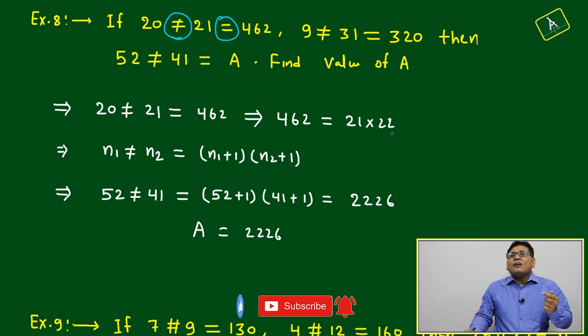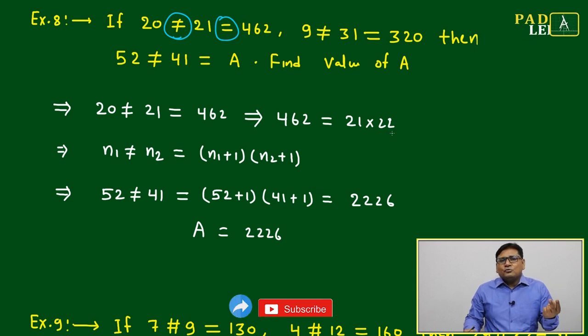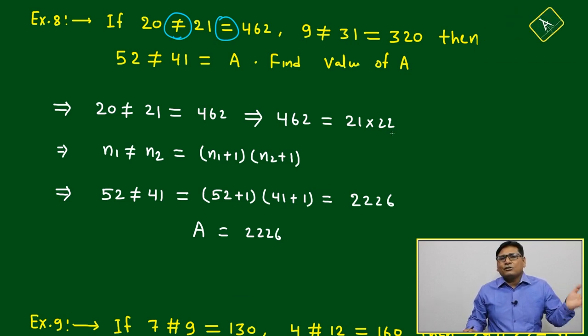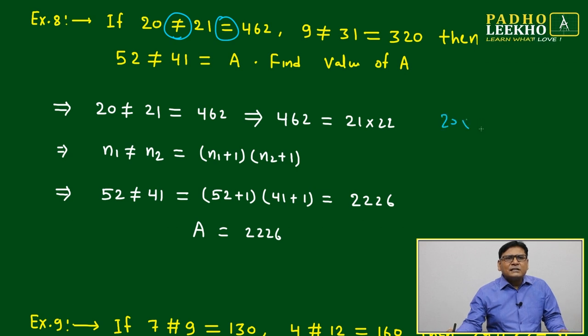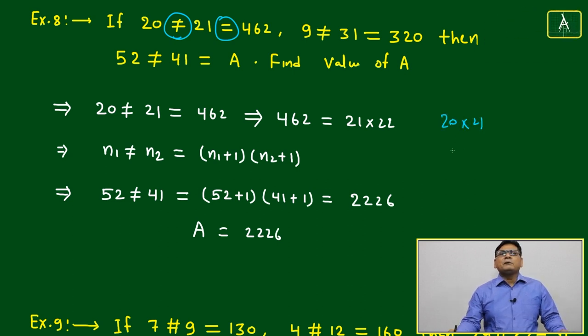Based on addition of two two-digit numbers, we can't get 400 or beyond 400, so it must be multiplication. If it is multiplication, immediately check 20 times 21. That multiplication itself, how much is it? 420. What is desired? 462. What is difference? 42.